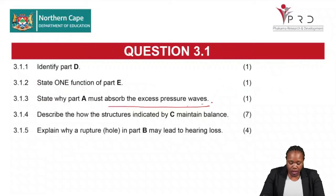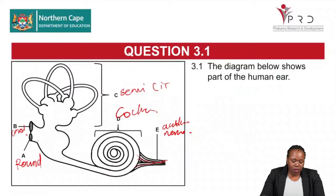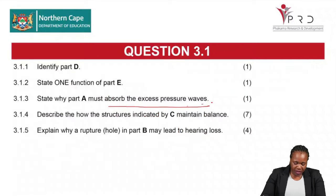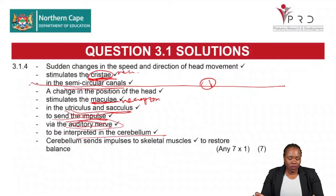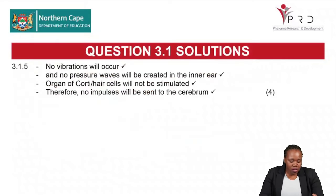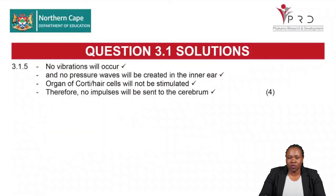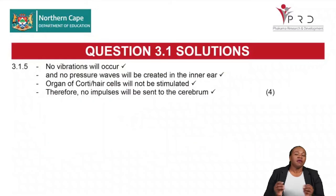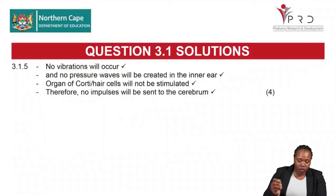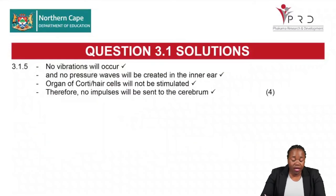Question 3.1.5 asks why a rupture or hole in Part B — the oval window — may lead to hearing loss. The pinna traps sound, which travels through the auditory canal and causes the tympanic membrane to vibrate. The tympanic membrane vibrates the ossicles, and the last ossicle causes the oval window to vibrate. If there is a hole in the oval window, it will not be able to vibrate, so no pressure waves will be created in the inner ear.